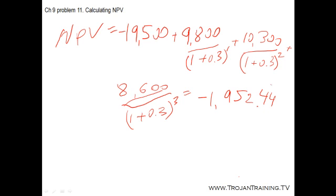Notice that as the required return increases, the net present value of the project decreases. This will always be the case for projects with normal conventional cash flows. Conventional cash flows are negative at the beginning of the project and positive throughout the rest of the project. So as the required return increases, the NPV decreases.